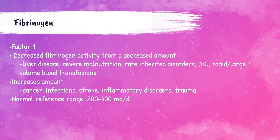Fibrinogen is another fibrin degradation product we test. The normal reference range is 200 to 400 nanograms per milliliter. A decreased level can indicate severe malnutrition or liver disease, DIC, or rare inherited disorders. An increased level can be associated with cancer, inflammatory disorders, trauma, infection, or even stroke.